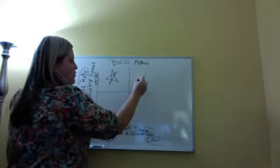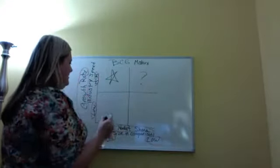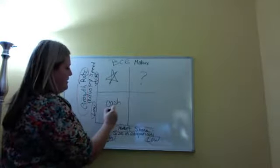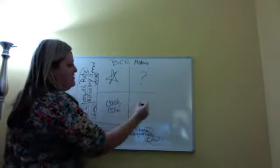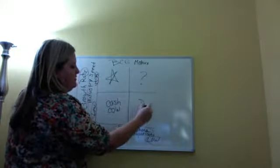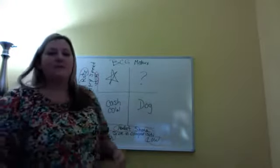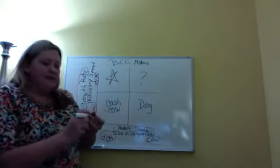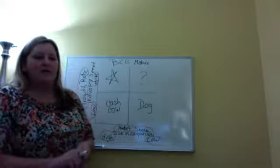You're going to have your stars, you're going to have your question marks, you're going to have your cash cows, and then here you're going to have your dogs. So you may be saying, oh my gosh Becky, what are you talking about?